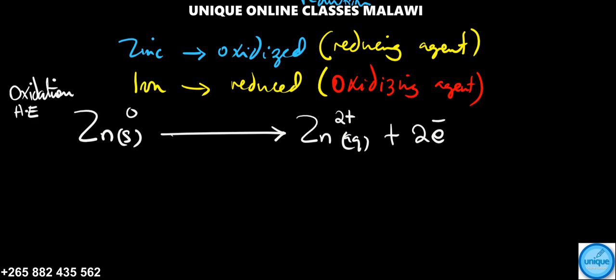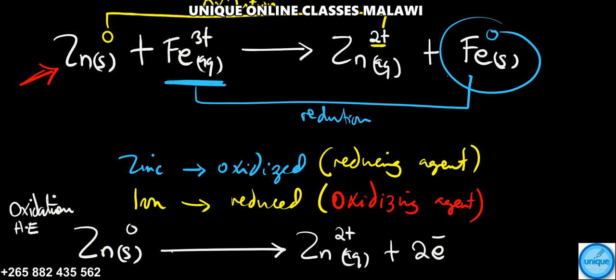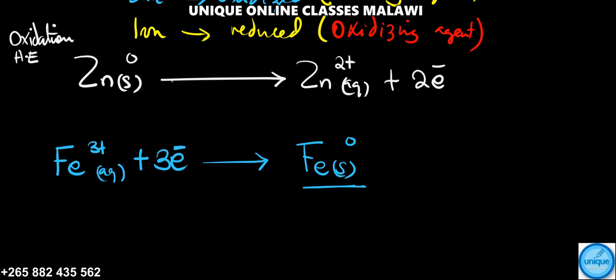Let's now write the reduction half equation. We have Fe³⁺ in aqueous state giving Fe solid. We need to add electrons on the left, so I'm adding three electrons here. We're going to have -3 plus +3 equals zero. So this is the reduction half equation.